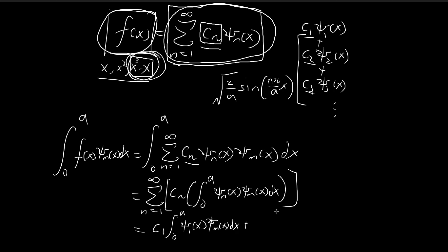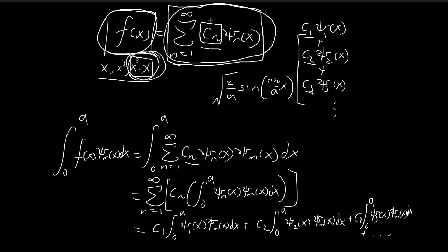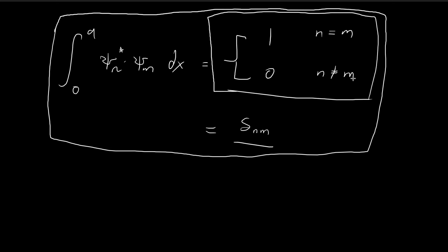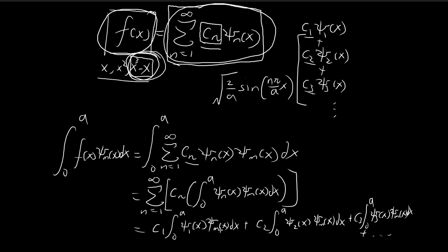What this means is that we have c1 times the integral of ξ1(x)·ξm(x) dx, plus c2 times the integral of ξ2(x)·ξm(x) dx, plus c3 times the integral of ξ3(x)·ξm(x) dx, and so on to infinity. Now as shown in the previous video, if n is not equal to m, then each such integral equals zero. So assuming m is not equal to 1, 2, 3, etc., those terms all vanish.